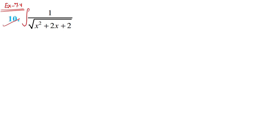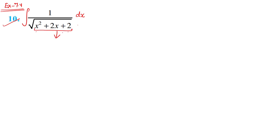We have to integrate 1 upon root of x² + 2x + 2 dx. We have studied formulas for functions like √(x² + a²), √(a² - x²), or √(x² - a²). There is no direct formula where there is an x² term, an x term, and a constant term together. So this is not a perfect square, and we need to make it one.